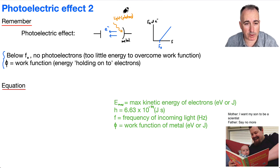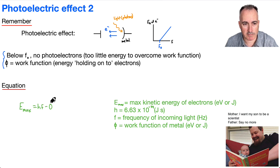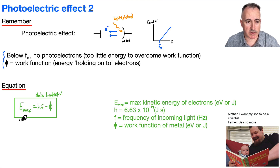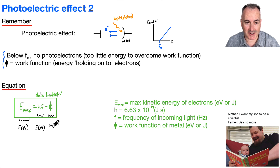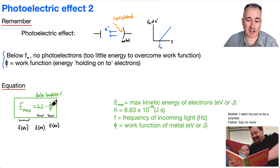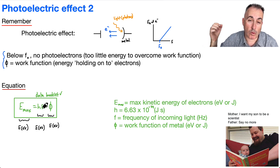We have an equation from our data booklet: Emax equals HF minus φ (phi). This right here is your maximum kinetic energy of your electrons. This is an energy measured in electron volts. E equals HF is also an energy measured in electron volts. And phi, the work function, is also an energy in electron volts. So you've got energy equals energy minus energy. This is the energy of the photons coming in — HF. Some of that energy got used to overcome the work function, and the remaining energy — the difference — that's what's given to your electrons.